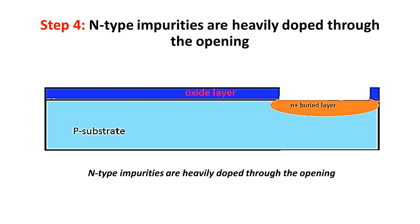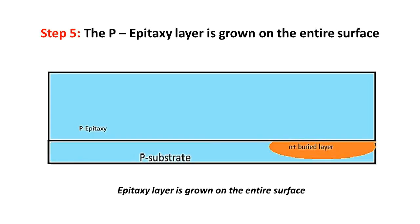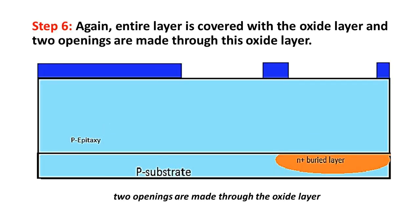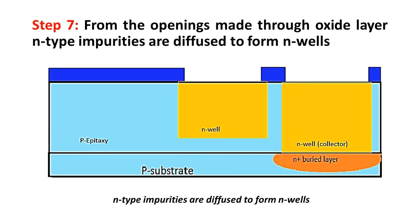Step 5: The P-epitaxy layer is grown on the entire surface. Step 6: Again, the entire layer is covered with the oxide layer and two openings are made through this oxide layer.